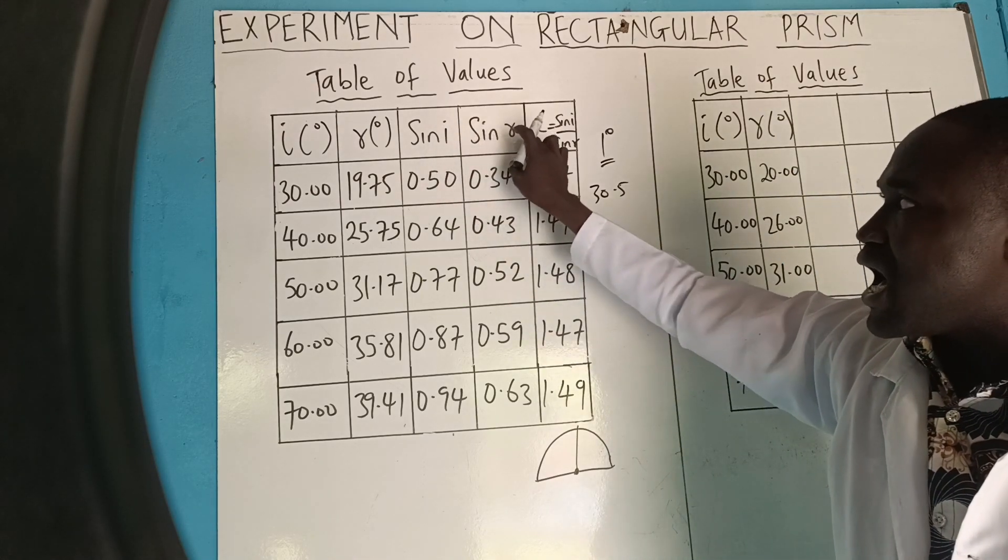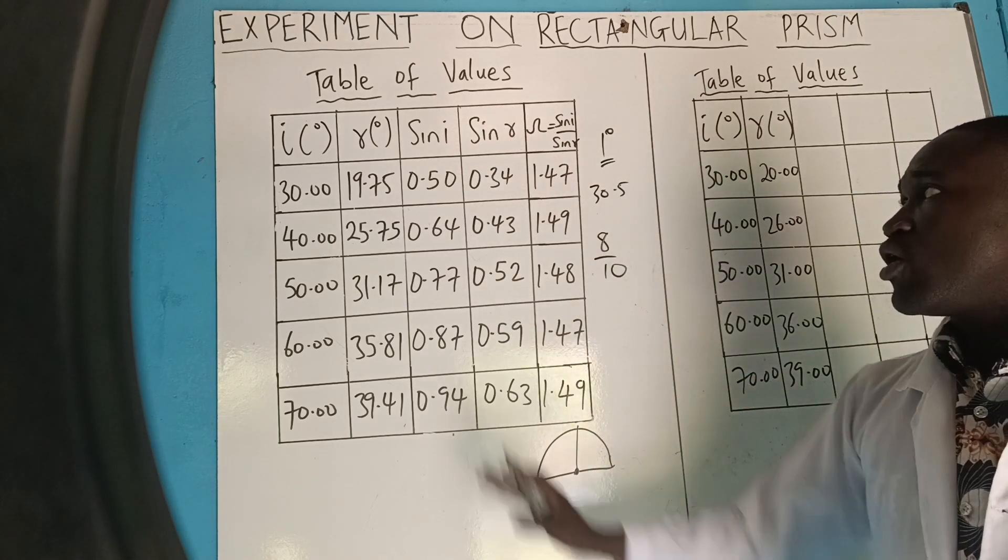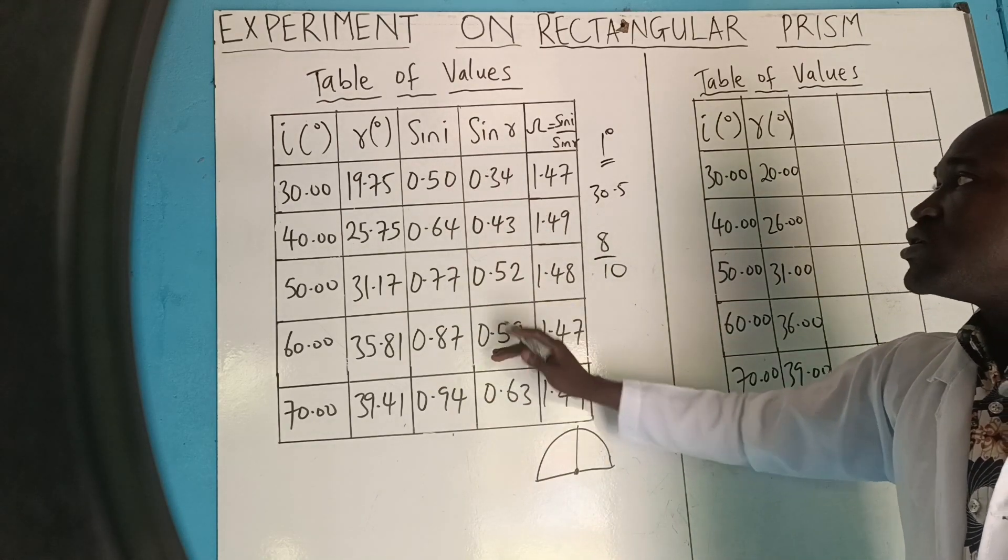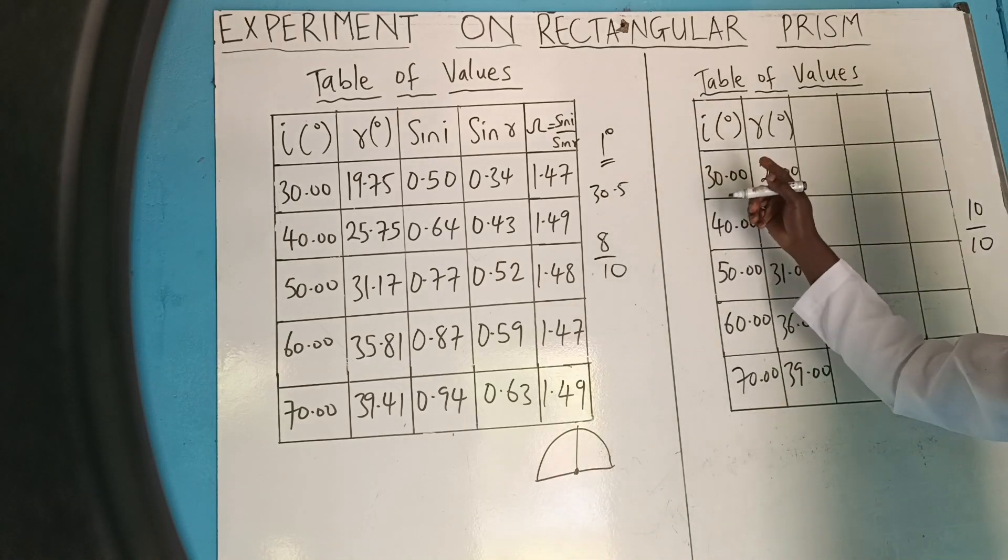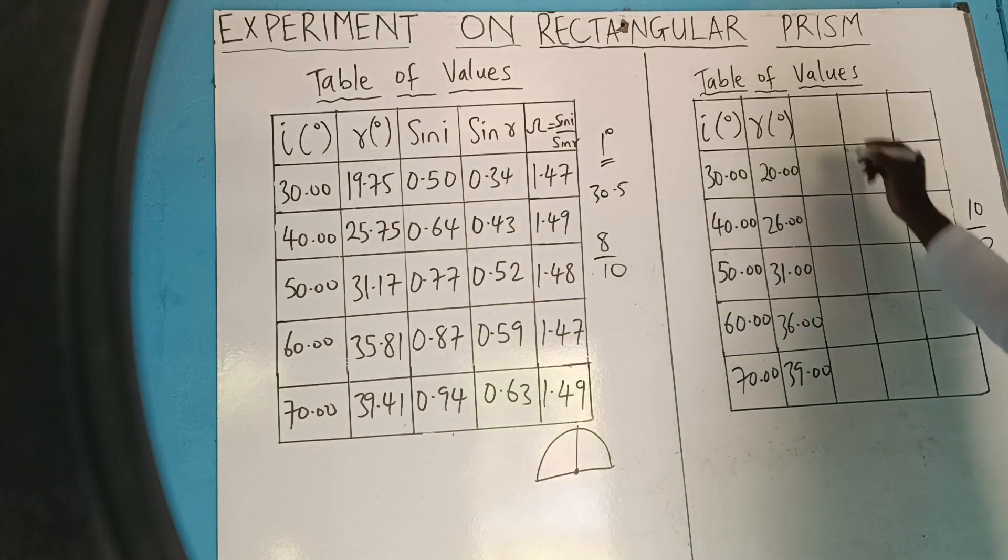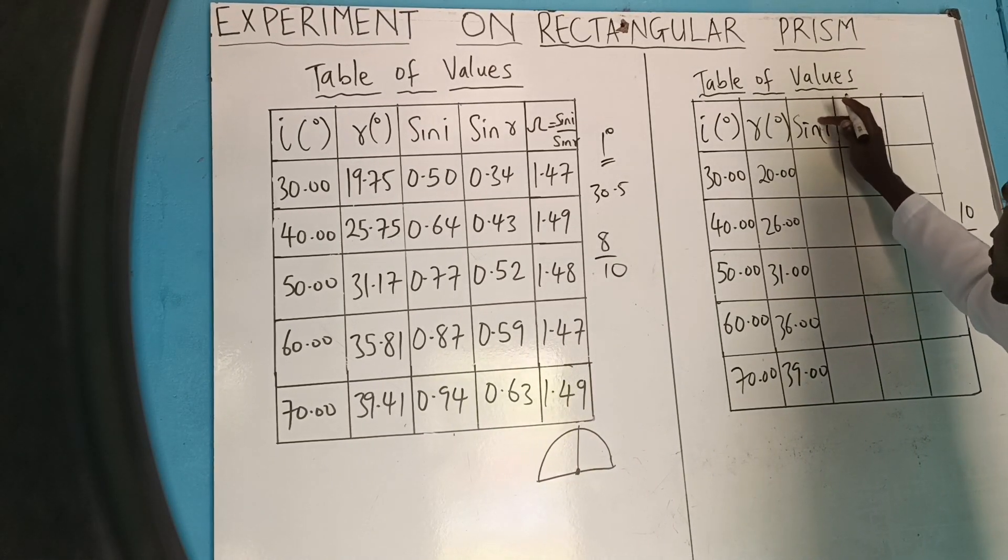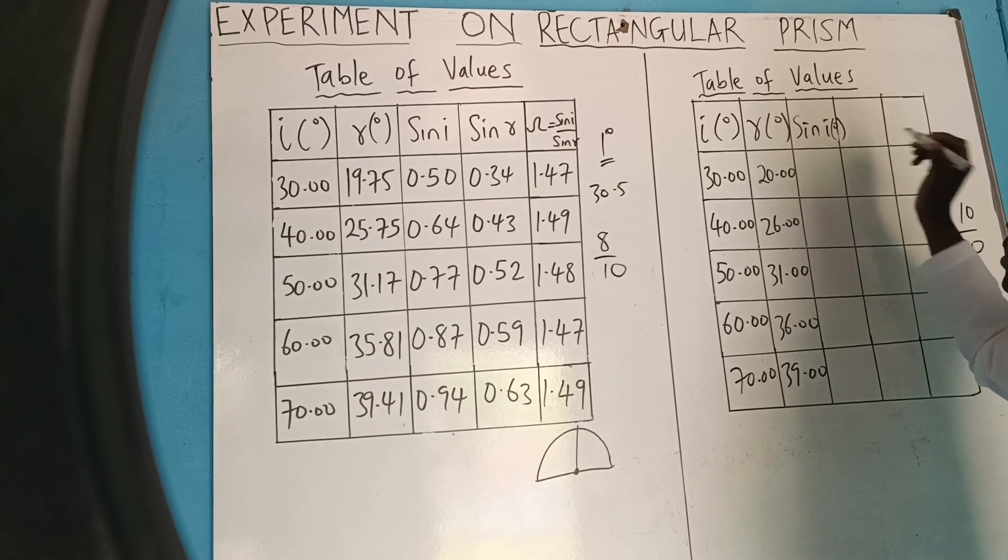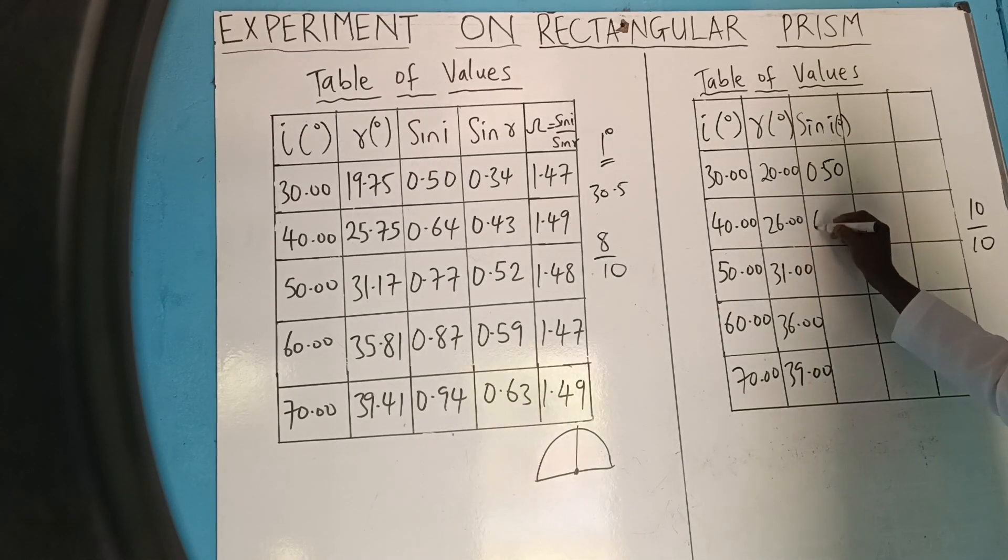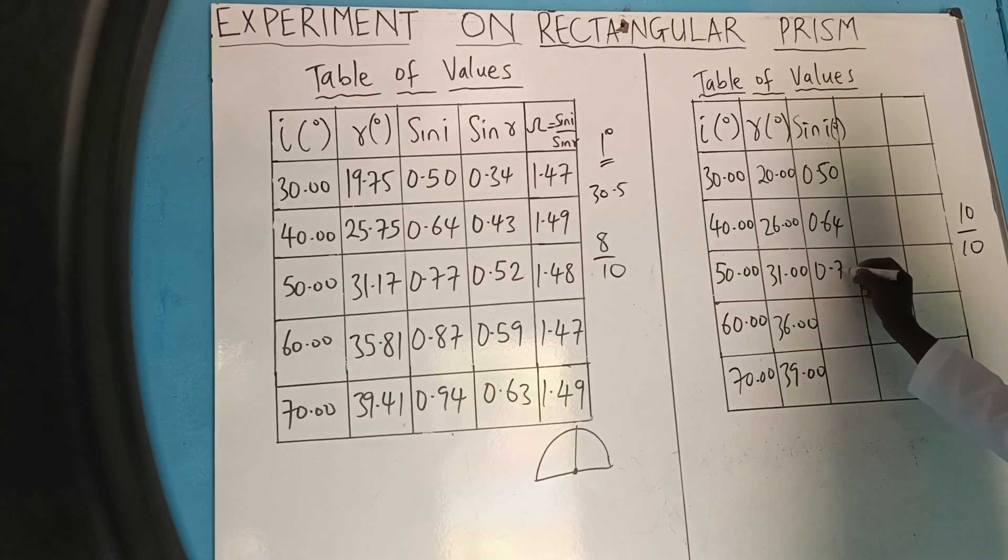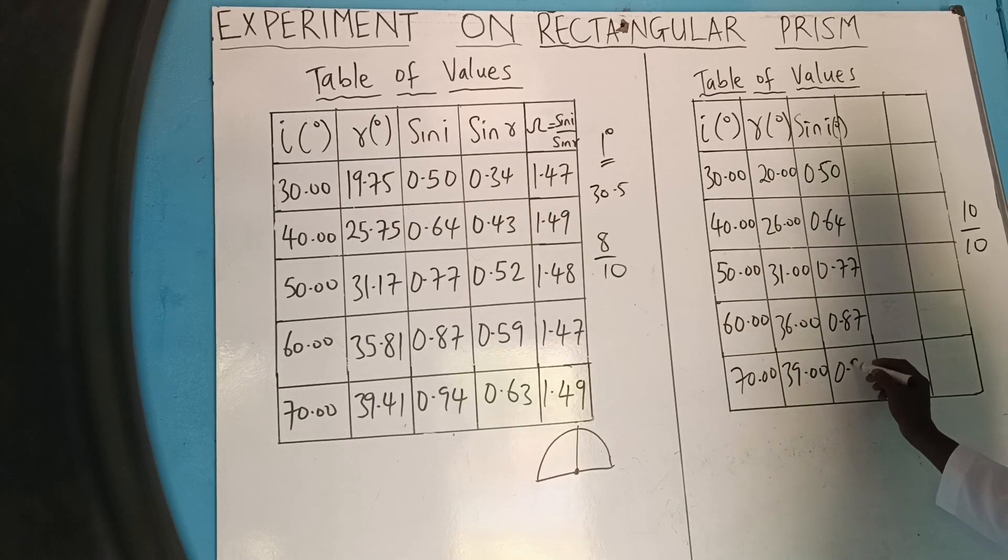But for this sin I and sin R, nothing concerns you about protractor there. Because this is a calculated value. It's not a value we get from measuring instruments. And so we have to get our I and our R. Sin I in degrees. That means sin 30, 0.5. You still remember what it is? 0.64. 0.77. That is sin 50. 0.87. Sin 70, 0.94.